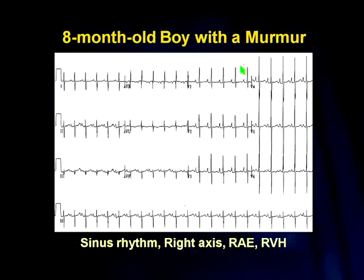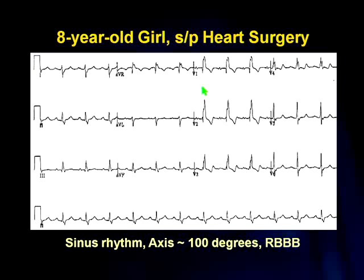An eight-month-old with a murmur: sinus rhythm, P wave before each QRS. Looking at aVF — negative again — electrical activity directed superiorly. In this case it's a right axis deviation. The P waves in V1 and V2 are typical of right atrial hypertrophy. There's also right ventricular hypertrophy with a pure R wave in V1, and the T wave in V1 is not properly negative — further evidence of RVH.